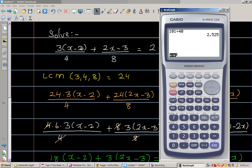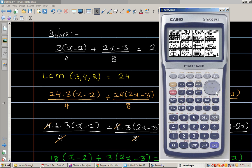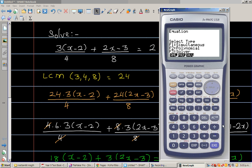So what you do is you go to menu and go to your equation. This is a bit cunning way and then you go to solver. And then you simply type in this. So I go 3 bracket x minus 2 divided by 4. Then you've got plus. Let's put this in the bracket. Plus 2x minus 3 divided by 8.